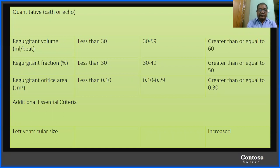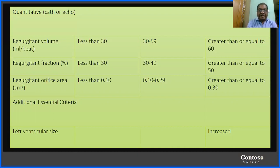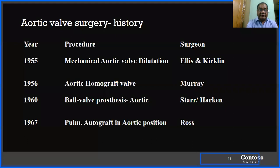Quantitative assessment of aortic regurgitation: regurgitation volume less than 30 mL/beat is mild, 30–59 mL/beat is moderate, and ≥60 mL/beat is severe. Regurgitation fraction: less than 30% is mild, 30–49% is moderate, and ≥50% is severe. Regurgitant orifice area: less than 0.10 cm² is mild, 0.10–0.29 cm² is moderate, and greater than 0.30 cm² is severe. Increased left ventricular size also indicates severe aortic regurgitation.